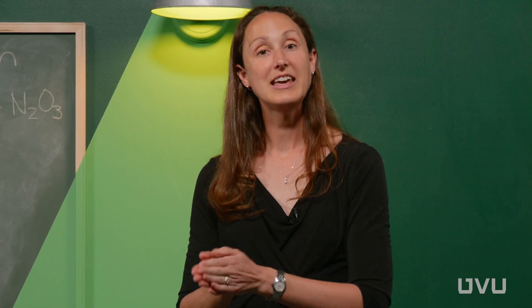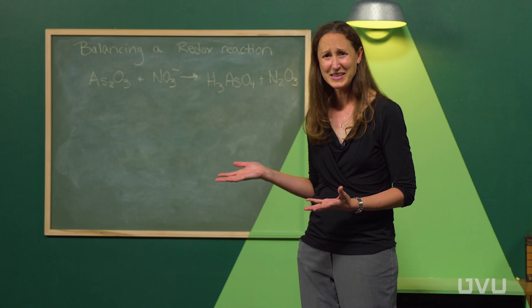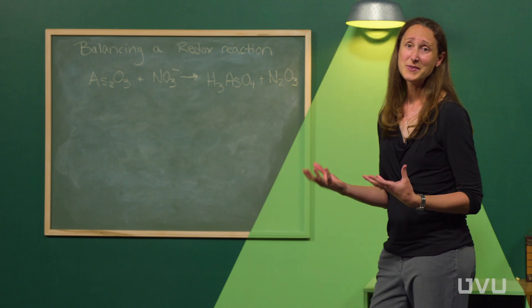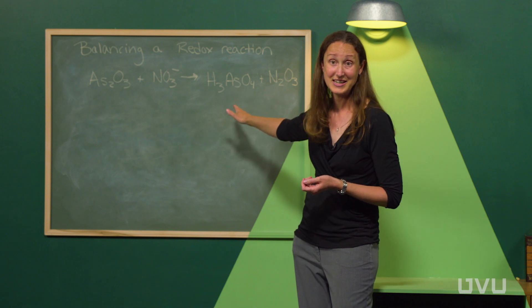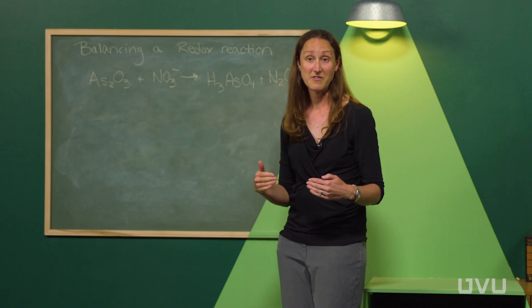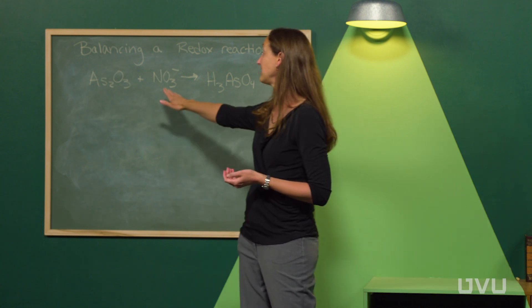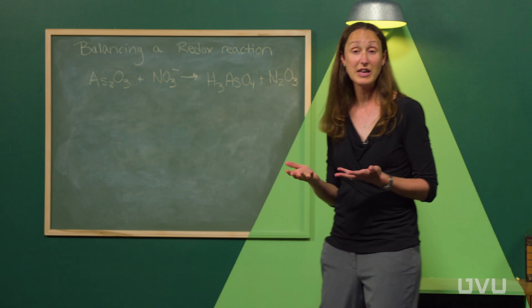The first step to balancing a redox reaction is to break it into two half-reactions: a reduction side and an oxidation side. We'll balance each half-reaction separately and then put them back together. To separate them, match like with like — the compound containing arsenic on the left goes with the arsenic compound on the right, and the nitrate goes with the dinitrogen trioxide since they share nitrogen.